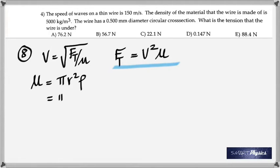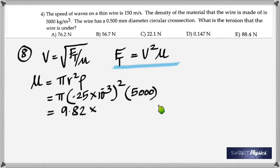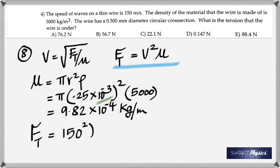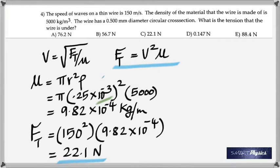When you rearrange that, you get Ft is V squared times mu, and mu is the mass of one meter, which would be pi r squared rho, because the shape is that of a cylinder and the volume of a cylinder is pi r squared times density, gives you the mass of one meter. Half of the diameter gives you the radius in meters times the density gives you the mass per unit length in kilograms per meter. Once you get that, substitute it back into this and you get the tension: 22.1 Newtons. This is a question that was repeated on the lab.